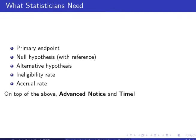What the statisticians need is: a primary endpoint, the null hypothesis, the alternative, the amount of difference, the rate you're going to use to inflate your sample size, and the accrual rate so you can project how long it will take to finish the study.